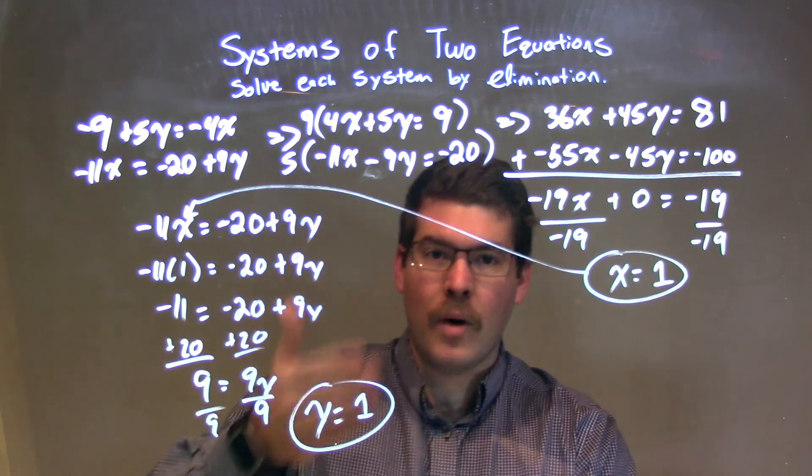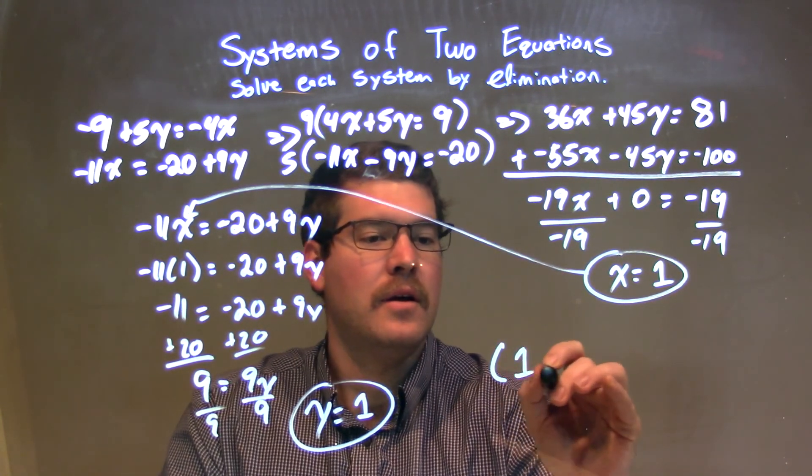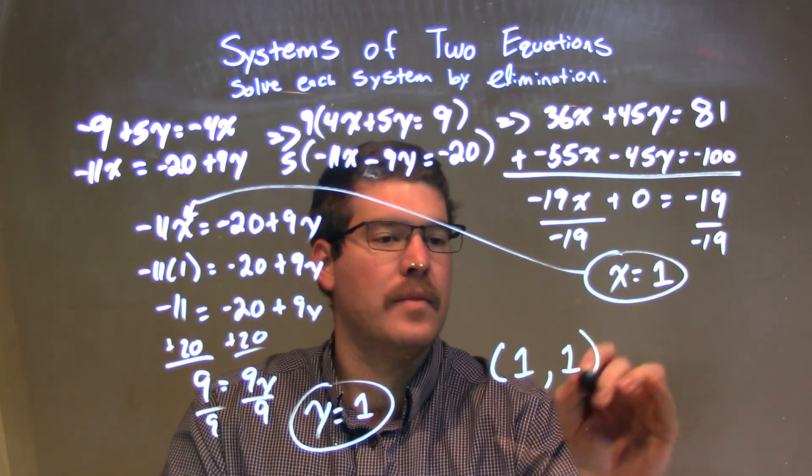So, we have x to be 1, y to be 1. Our final answer as a coordinate point is just (1, 1). And there we have it.